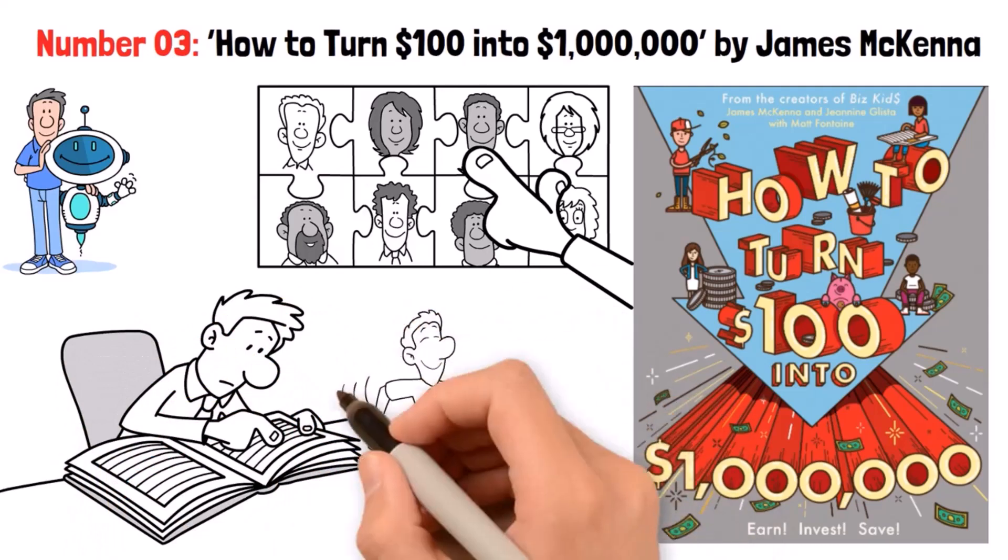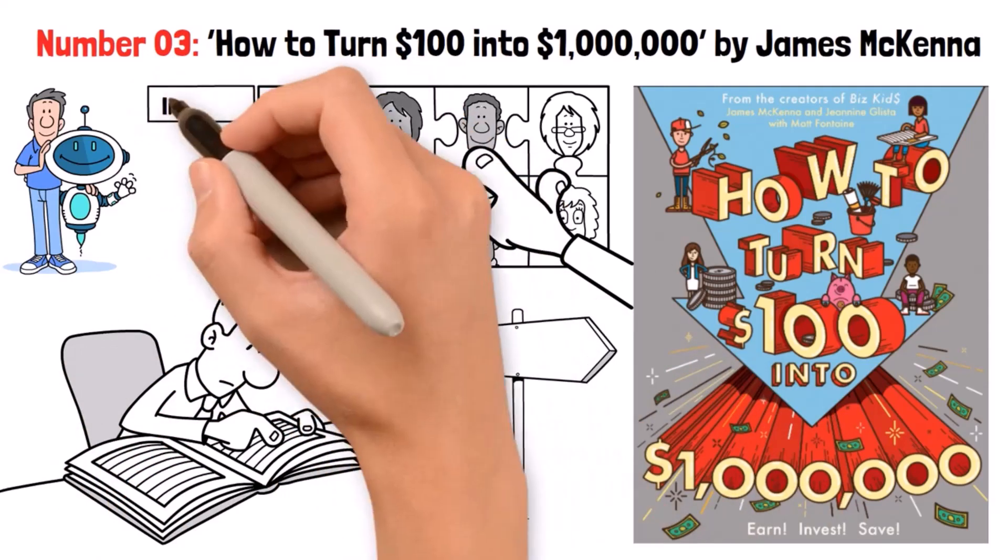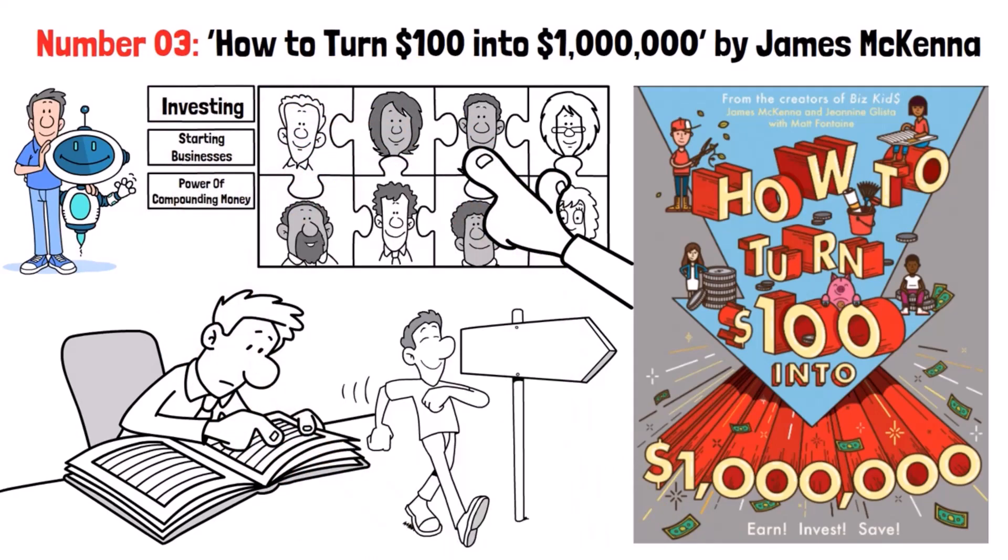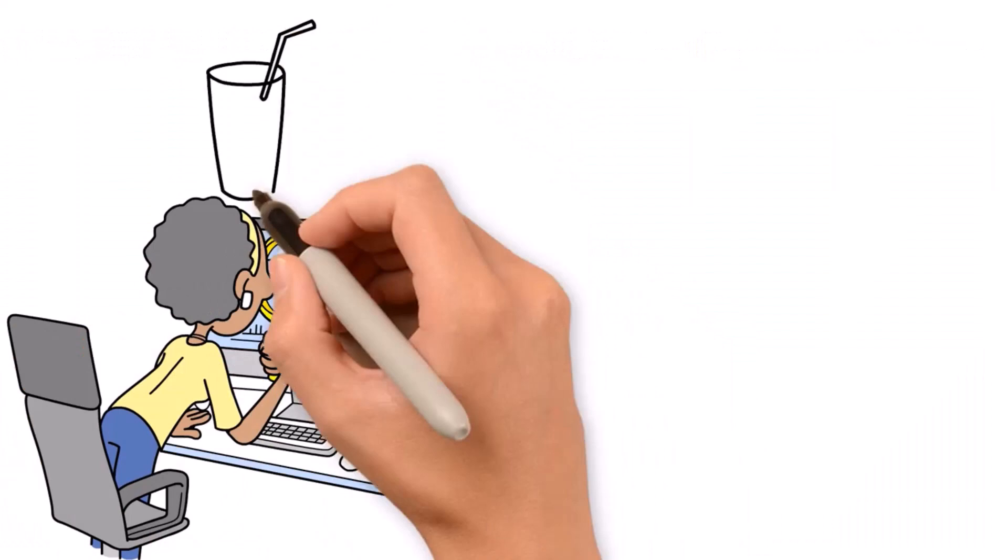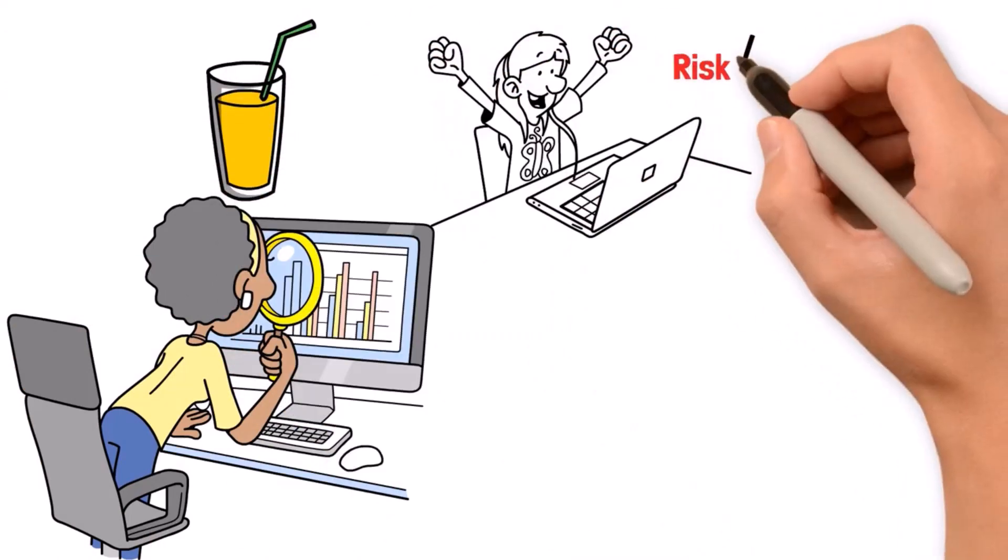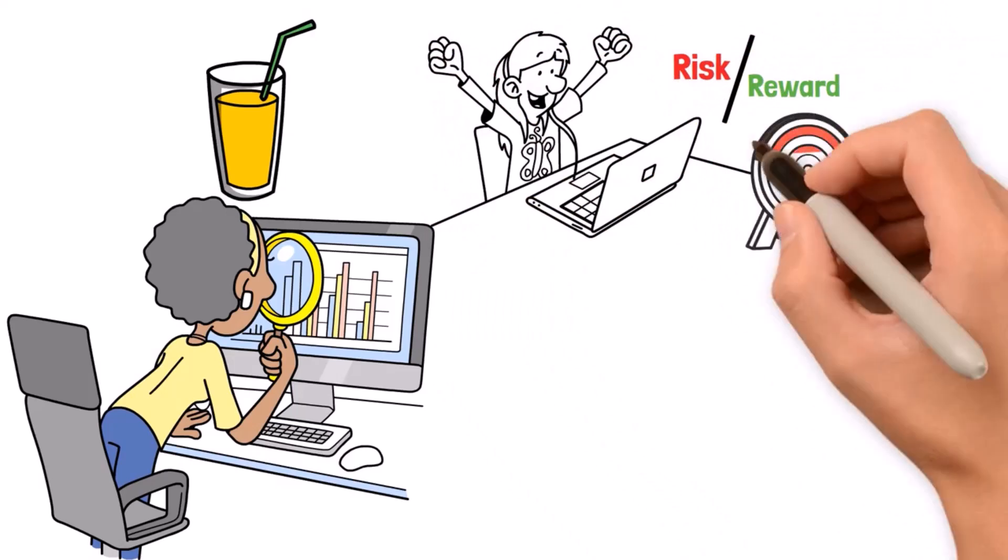Through relatable characters and adventures, Mr. McKenna demystifies investing, starting businesses, and the power of compounding money over time. Whether investing in the stock market or selling lemonade, children learn important principles about business, risk versus reward, and goal setting.